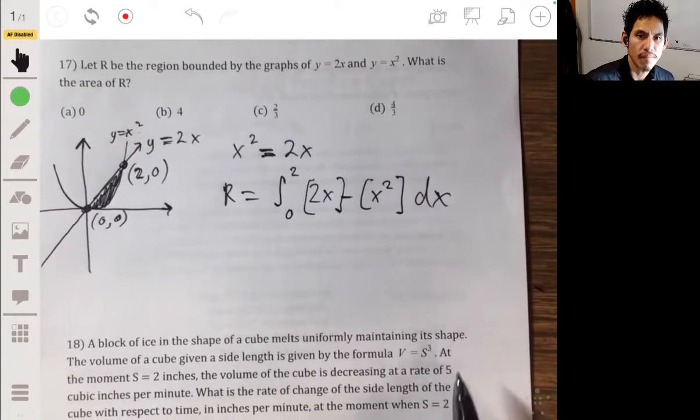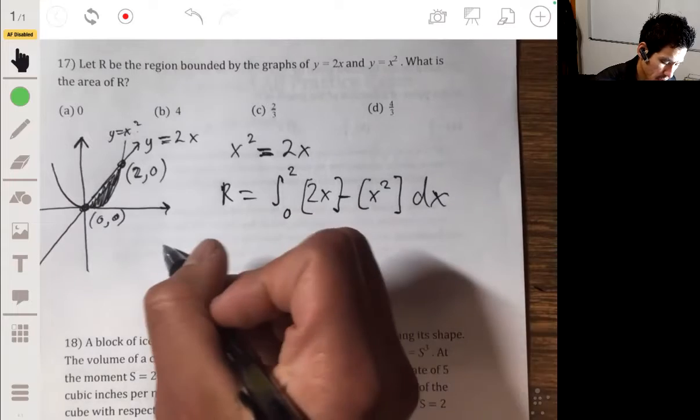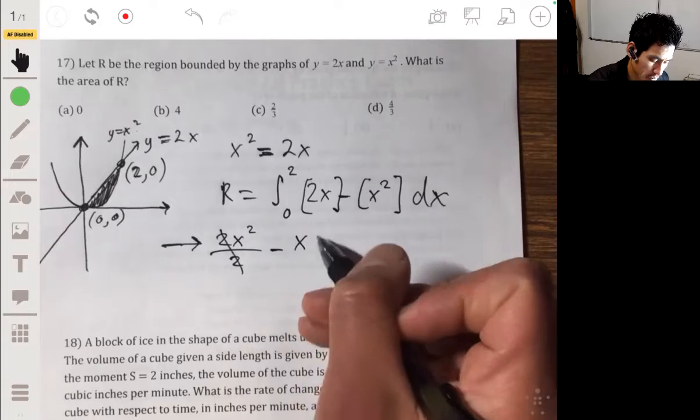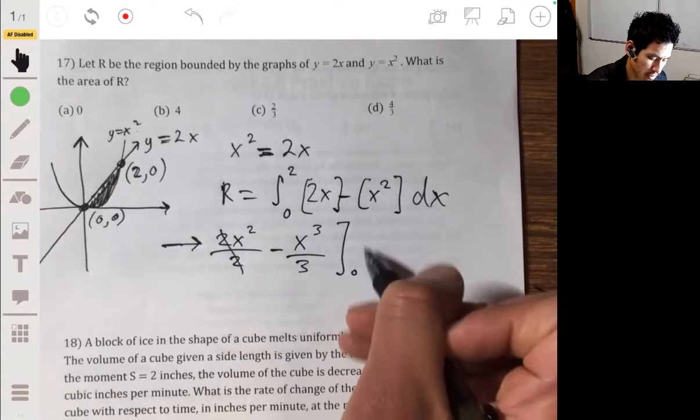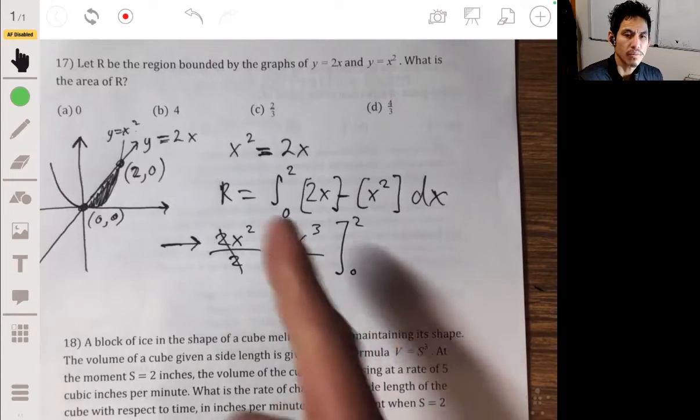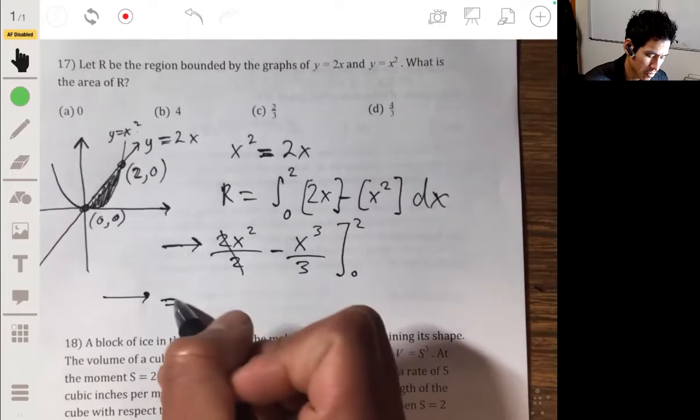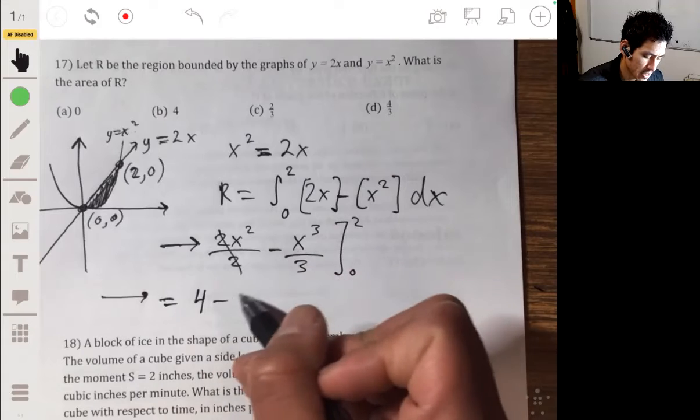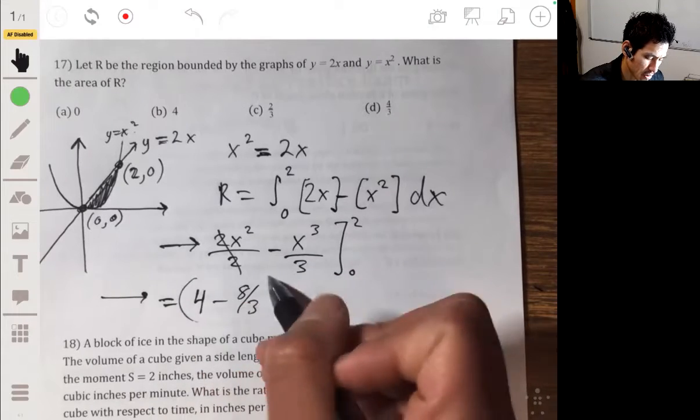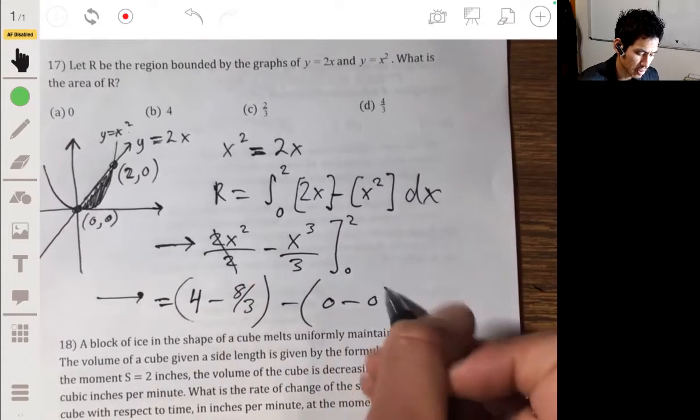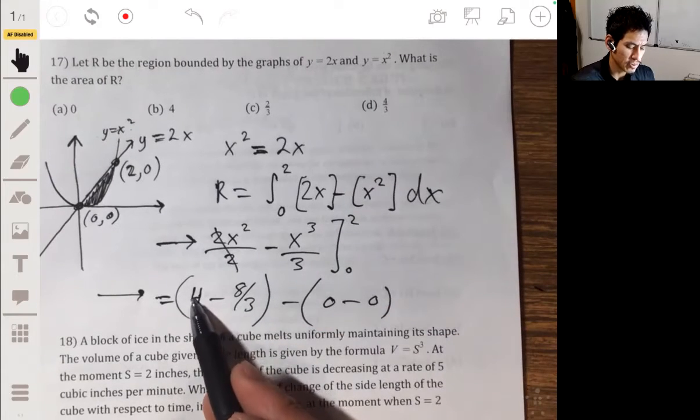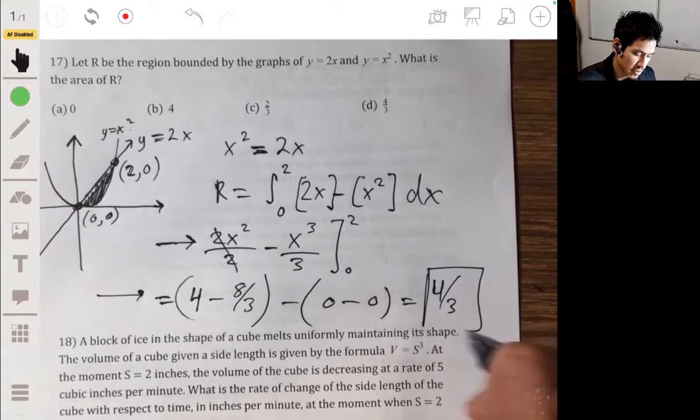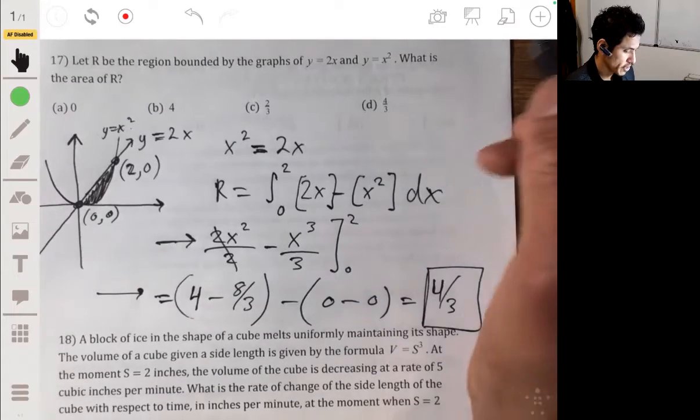So then we integrate this. And so then we just do our anti-derivative rule, 2x squared over 2, those 2's cancel, minus x cubed over 3, and we're integrating from 0 to 2. So then we plug in 2, so we have 4 minus 8 thirds minus, plug in 0, it's just 0. So it's really just 4 minus 8 thirds, or 12 thirds minus 8 thirds, which will just give us 4 thirds. So the answer will be D.